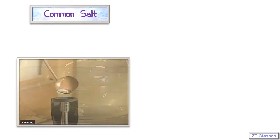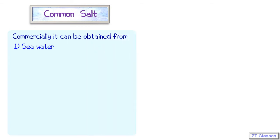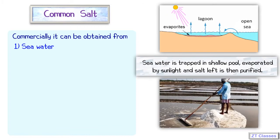But commercially, it is not viable to obtain common salt in the lab. So how do you obtain common salt commercially? One of the common ways is by using seawater. At the seashore, salt water is collected in shallow pools and then left for a few weeks for the water to evaporate. What is left is salt with a lot of impurities, which is then purified to obtain common salt.